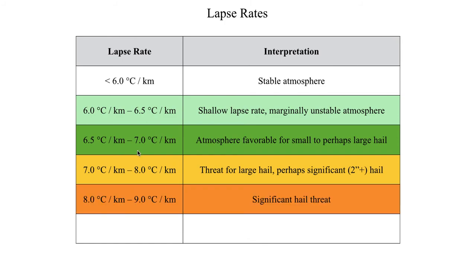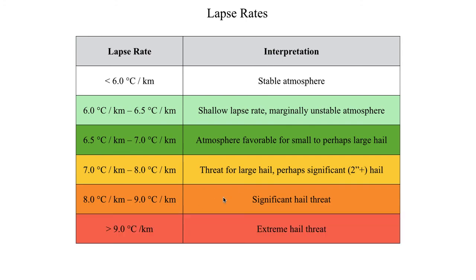At 8 to 9 degrees C per kilometer, you should become very worried about hail. Supercell thunderstorms in an environment with these lapse rates will have very robust updrafts supporting very significant hail — potentially 3, maybe even 4 inches in diameter if other environmental factors are conducive. If you happen to see lapse rates over 9°C/km, which happens on some rare occasions, those hailstones could be quite large — the most intense supercells in such an environment are probably talking hailstones of 4 inches or larger. You don't want to be under a thunderstorm with lapse rates like that.